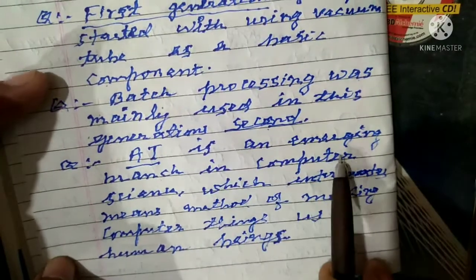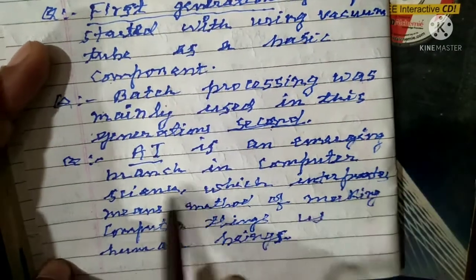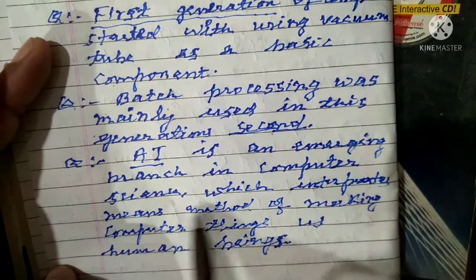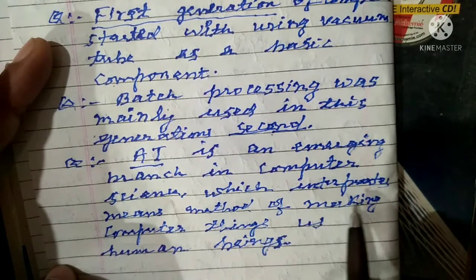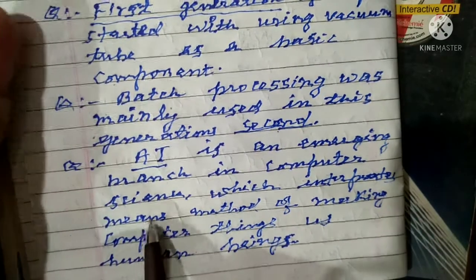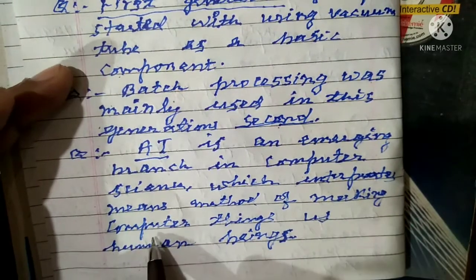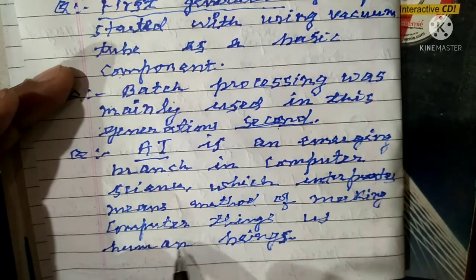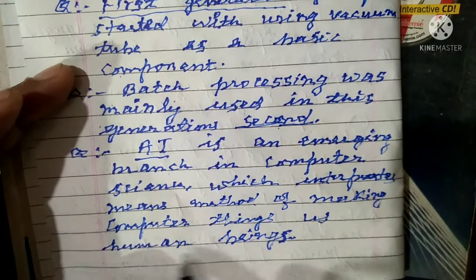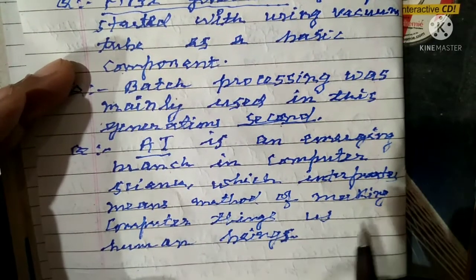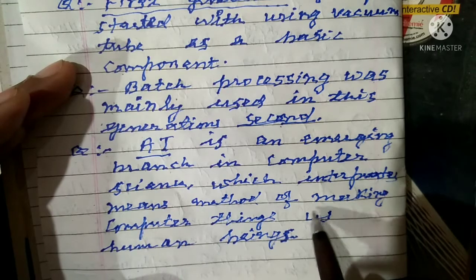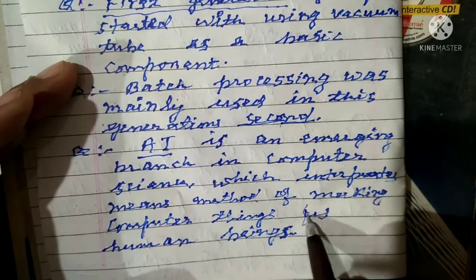AI is an emerging branch in computer science which means the method of making computers think and act like human beings.